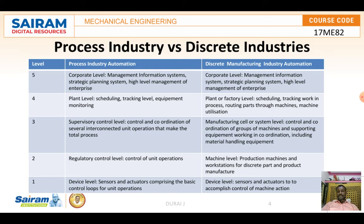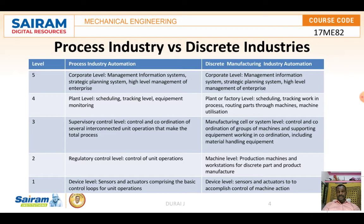At the supervisory control level in the process industry, it involves control and coordination of several interconnected unit operations that make up the total process. In discrete industry, supervisory control involves coordination of groups of machines and supporting equipment, including material handling equipment. Material handling is a major task — if material is not handled properly, it causes damage and becomes a huge loss to the industry.